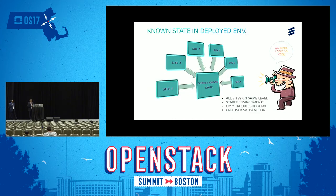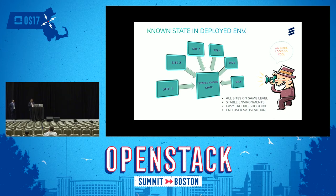Here you can see we have six different sites and all these sites are pointing to a stable known state infrastructure. That means all these sites are on the same level and pointing to a stable known state. We have created this stable known state infrastructure from the baseline, so all six sites are pointing to this stable known state and are on the same level.